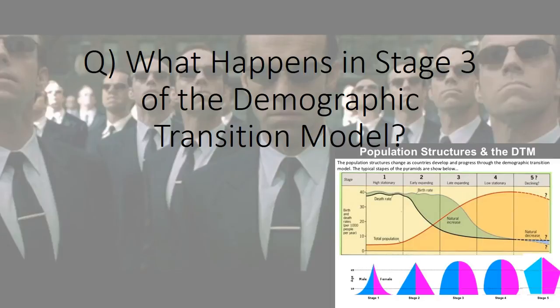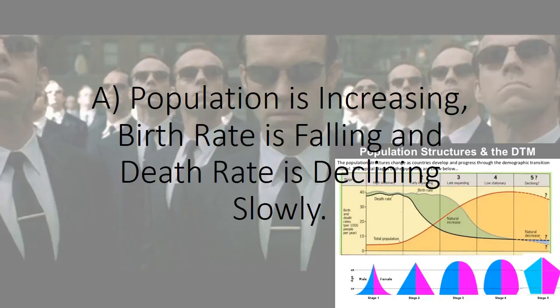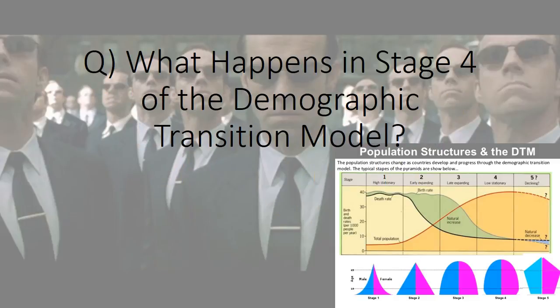What happens in stage three of the demographic transition model? Population is increasing; birth rate is falling and death rate is declining slowly.